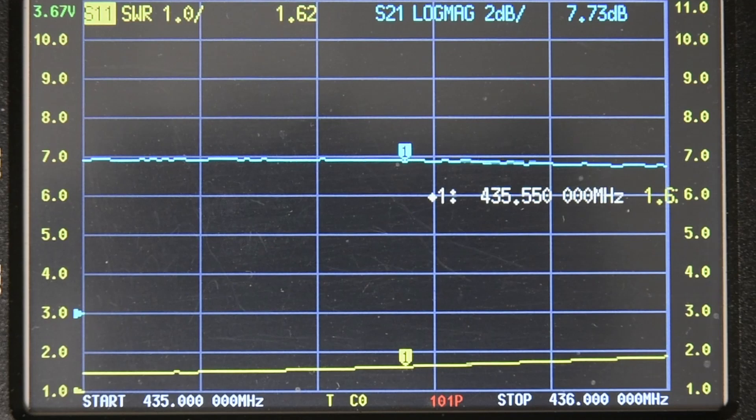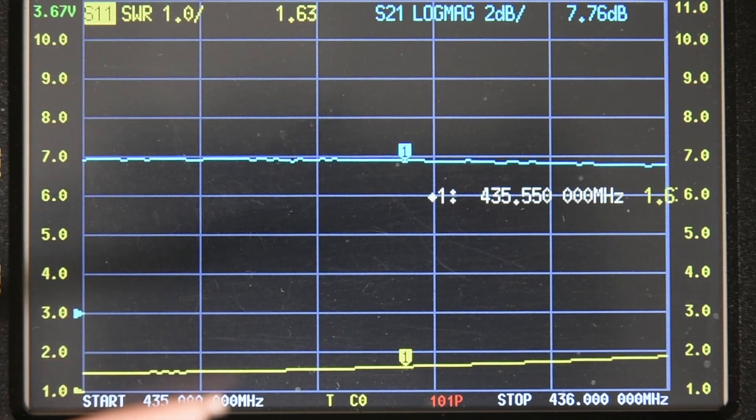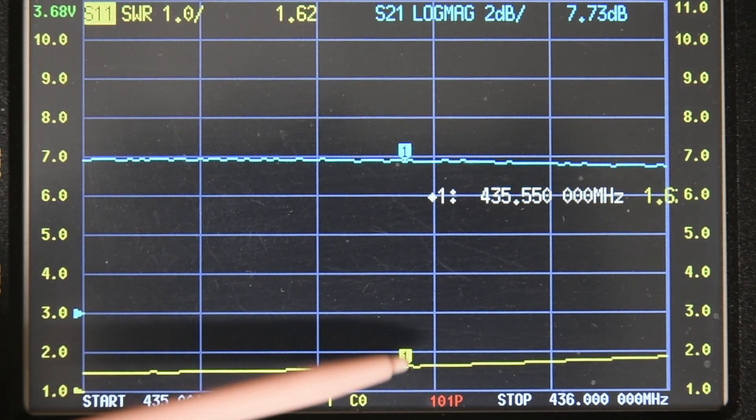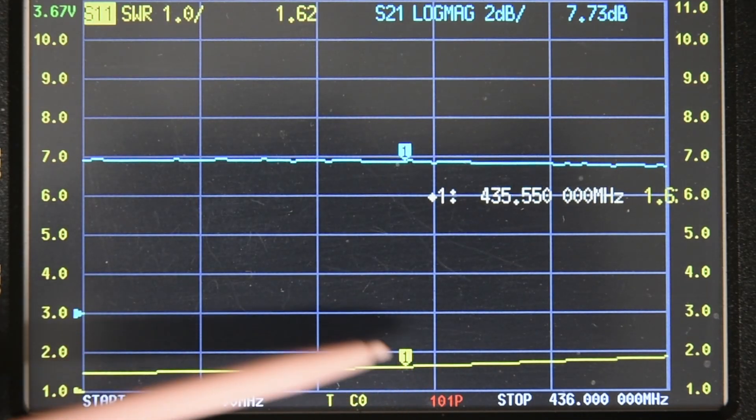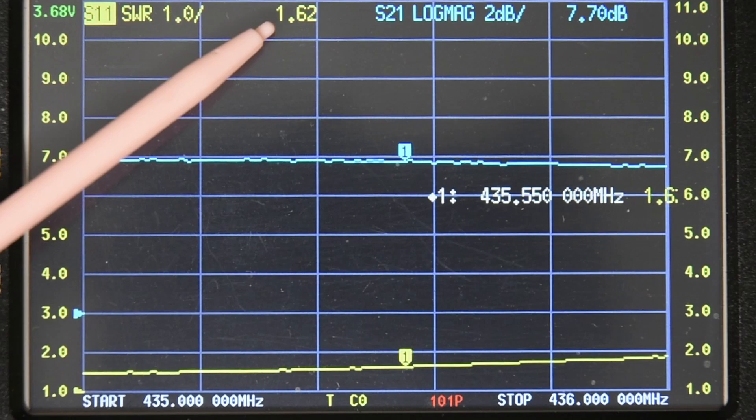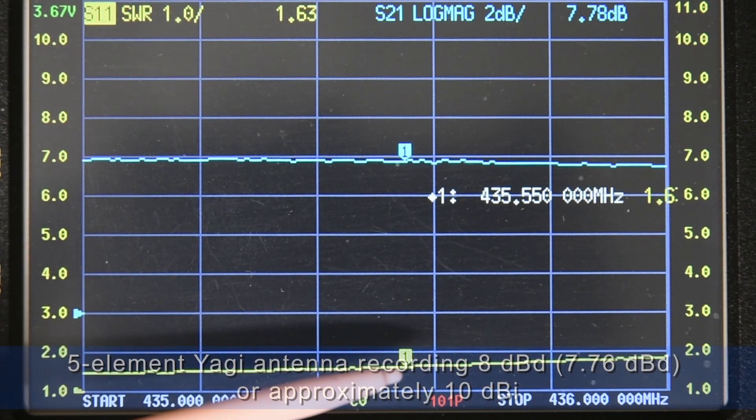So given it's a backyard measurement it's probably fairly close. We have had to readjust the position of the reflector and first director to achieve this figure. So what we're looking at is the yellow trace indicating the SWR value which is one point six to one fairly good.